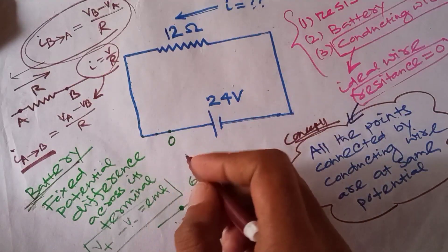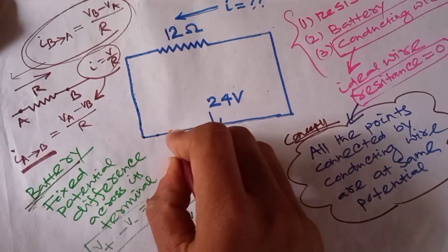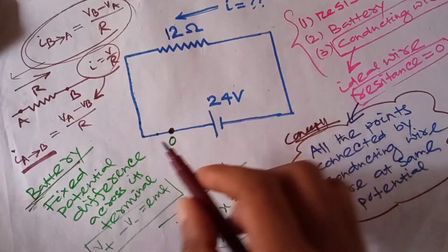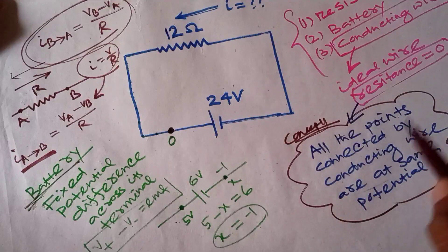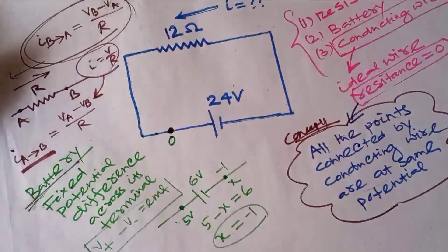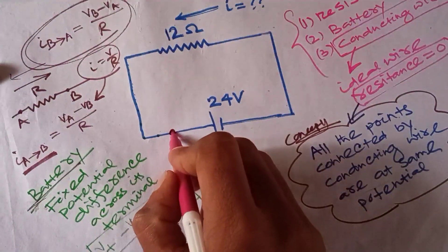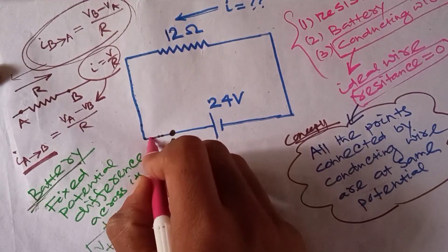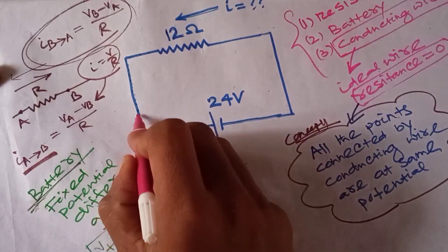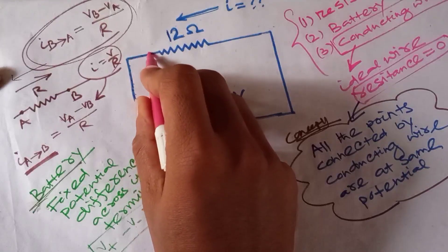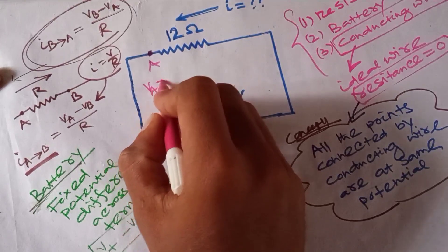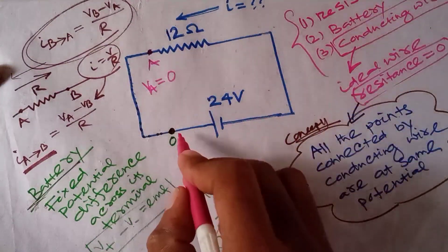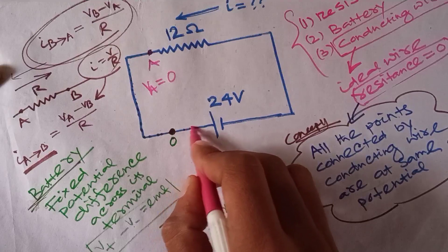Now let's solve the electrical circuit. We start by assuming any one point to have potential 0. We take this point to have potential 0. Now applying concept one — all points connected by conducting wire are at the same potential — the points connected to this node are all at potential 0.